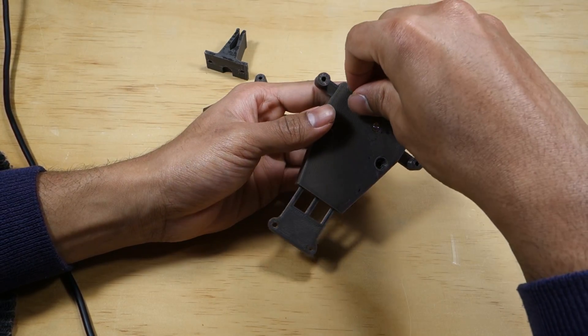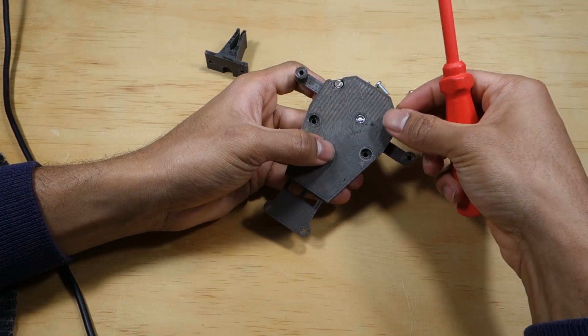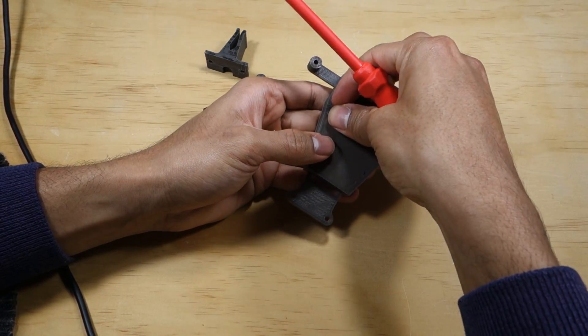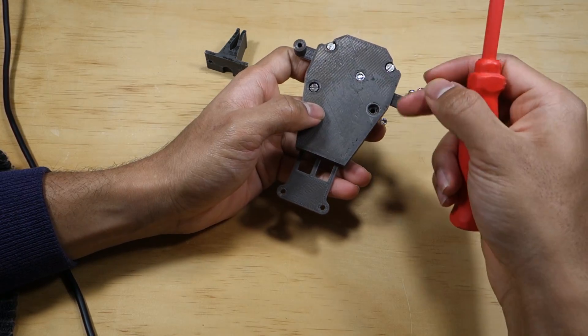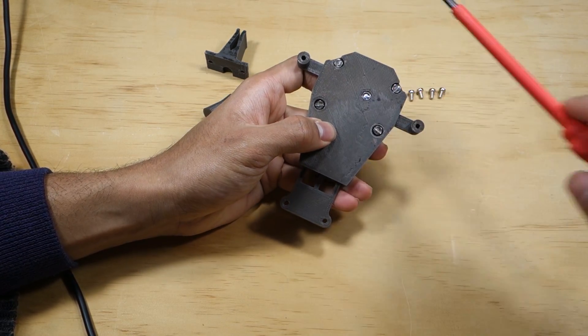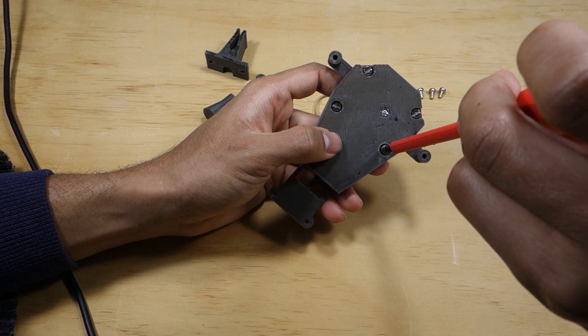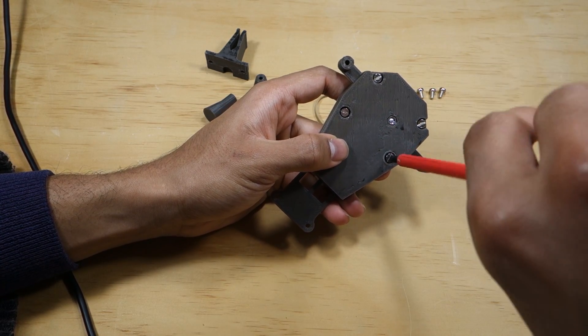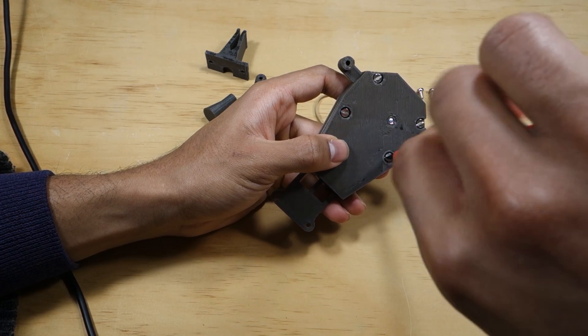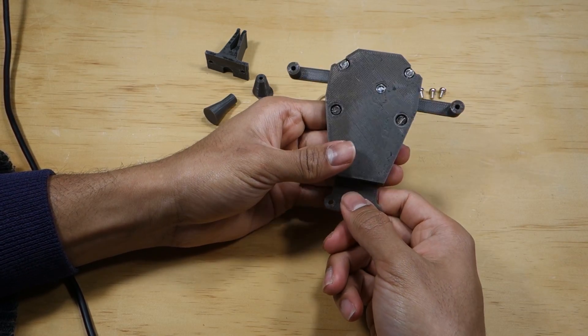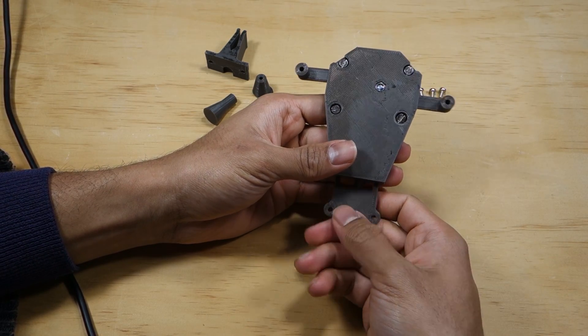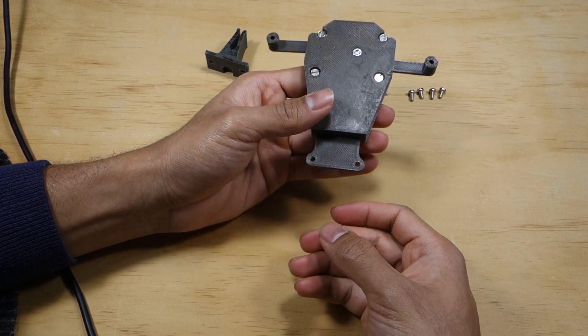Screw in four 6mm M3 screws as shown. Make sure the mechanisms can still move freely. If not, try loosening the screws, either these four or the one in the base.